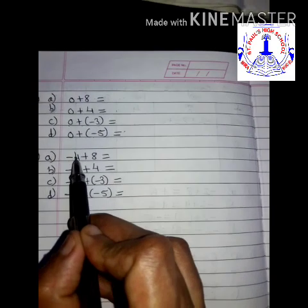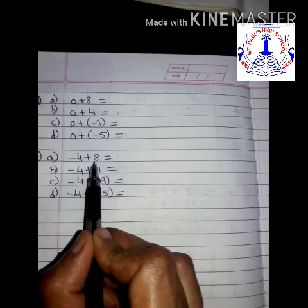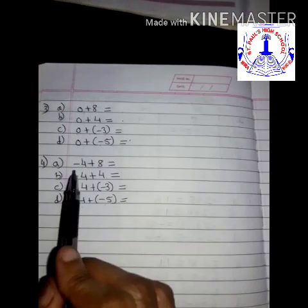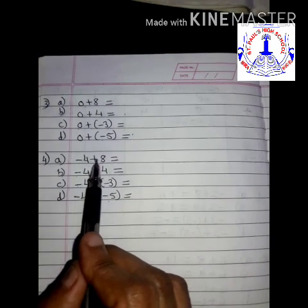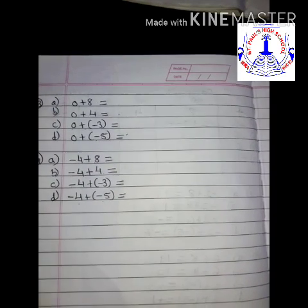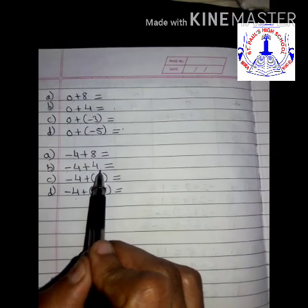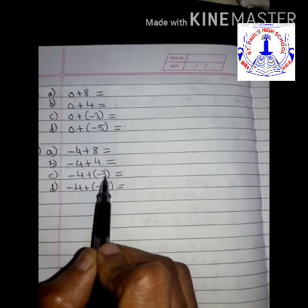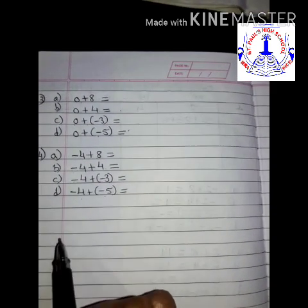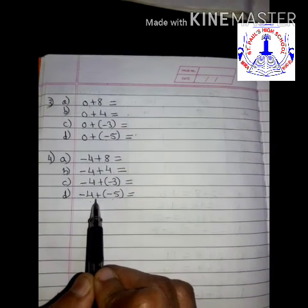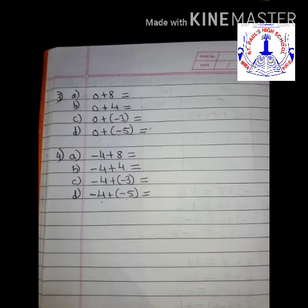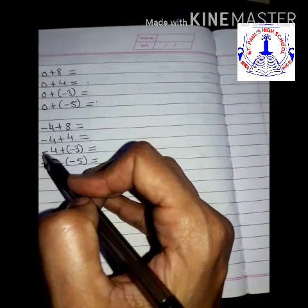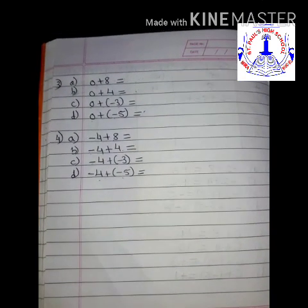For minus 4 plus 8: one is negative, one is positive, so subtract the smaller from the bigger and give the sign of the bigger number. Minus 4 plus 4 is 0. Minus 4 plus minus 3: both integers have the same sign, so add them and give the common sign. Similarly, minus 4 plus minus 5: both same sign — add the integers and give the common sign. I have explained all 4 questions; you have to solve rows 3 and 4 in your notebook.